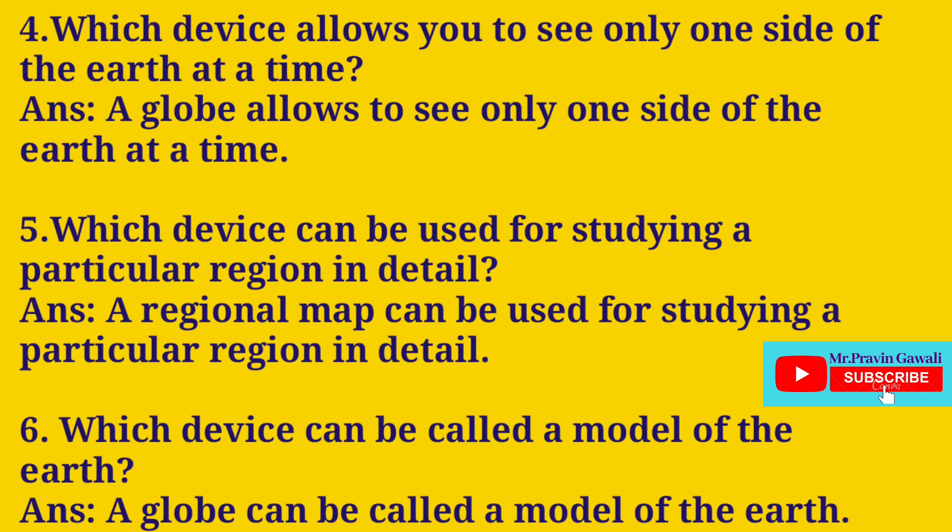Four, which device allows you to see only one side of the earth at a time? Answer: A globe allows you to see only one side of the earth at a time. A globe can also be called a model of the earth.